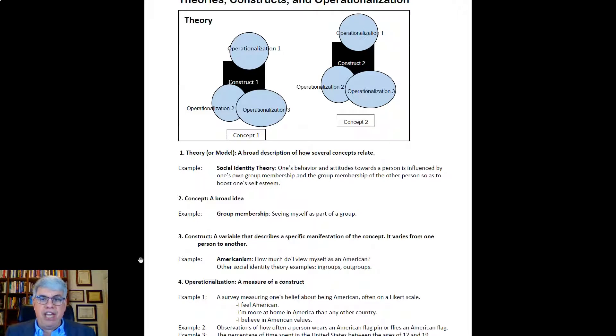Now, staying within social identity theory, there are other concepts that we can measure, like in-groups and out-groups, groups that I'm a member of. We can measure the degree, or just how many in-groups I feel like I'm a part of, how many out-groups, or what out-groups are salient for me. There's all kinds of concepts and constructs that are associated with a theory. We're just going to focus on this one concept, group membership, in one specific form, the construct of Americanism.